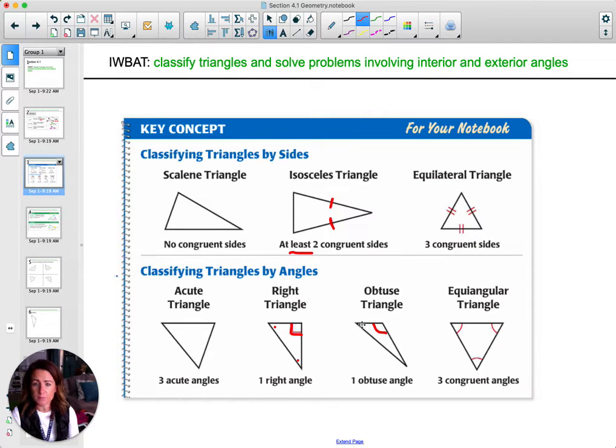So you'll see one large angle and then the two small angles. And then an equiangular triangle has all three angles congruent.